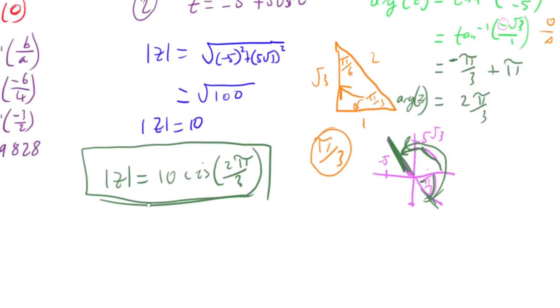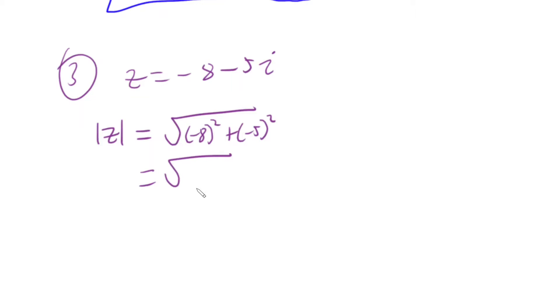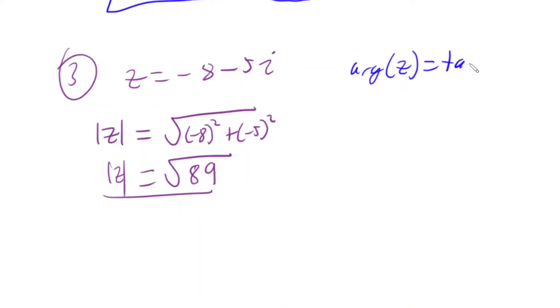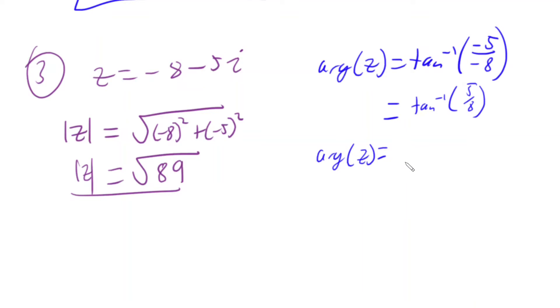My third example is z equals negative 8 minus 5i. The magnitude is the square root of negative 8 squared plus negative 5 squared. Putting that into the calculator gives root 89, which doesn't simplify, so we leave it as root 89. For the argument, we have inverse tan of our imaginary negative 5 over our real negative 8, which simplifies to inverse tan of 5 over 8, giving 0.5585 radians.